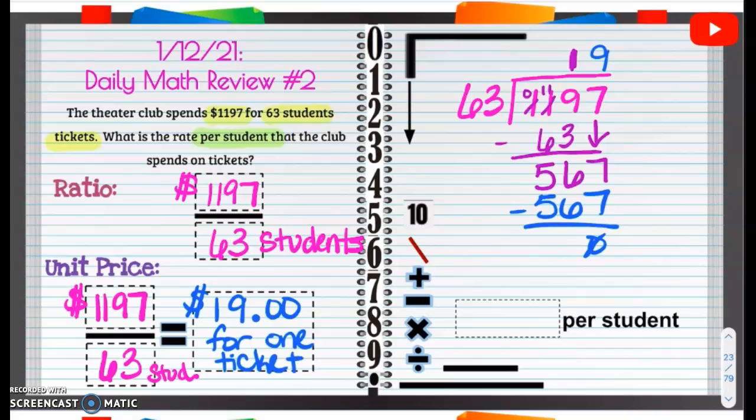So it'll be $19 even and 0 cents for one ticket. Or you could put per ticket. You can also put per student ticket or for one student ticket. So that's it for our answer.